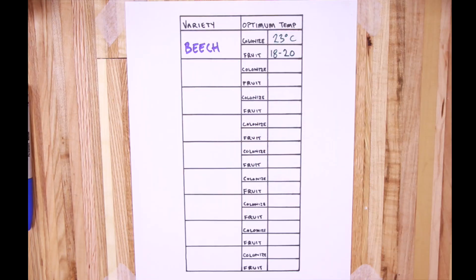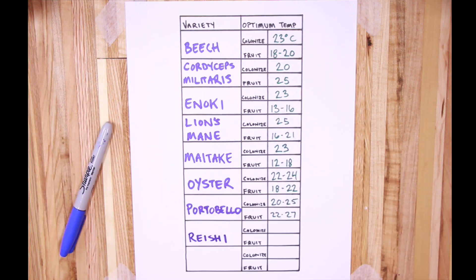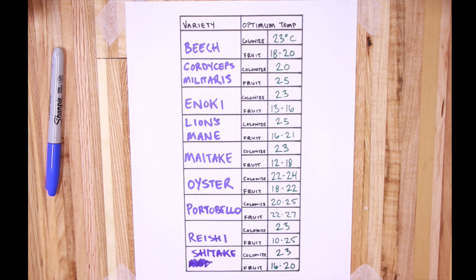Here are nine commonly cultivated mushroom varieties and their fruiting and colonizing temperatures. Keep in mind, these are the optimum temperatures and they will grow outside these. Beech mushrooms colonizing at 23 degrees Celsius and fruiting 18 to 20. Cordyceps militaris colonizing at 20, fruiting at 25. Enoki colonizing at 23, fruiting at 13 to 16. Lion's Mane colonizing at 25, fruiting 16 to 21. Maitake 23 and 12 to 18. For oysters, there are a bunch of different strains, but generally colonizing at 22 to 24 degrees and fruiting 18 to 22. Portobello 20 to 25 and fruiting 22 to 27. Reishi colonizing at 23, fruiting at 10 to 25. And shiitake 23, fruiting 16 to 20.